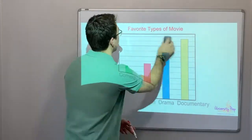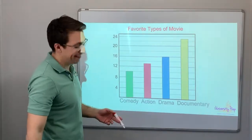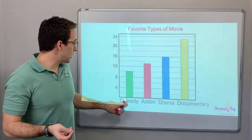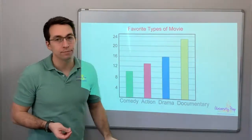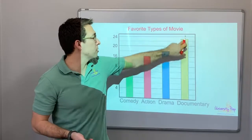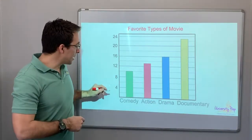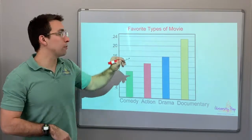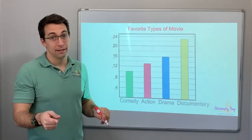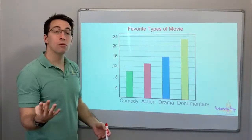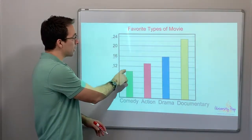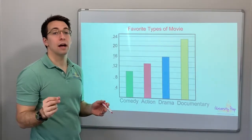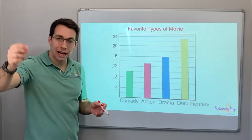Favorite types of movies: comedy, action, drama, documentaries. Documentaries are the most popular. Something tricky here: 4, 8, 12, 16, 20, 24 — it's not counting by two, it's counting by four, and it's got extra lighter lines in between. Be careful and make sure you're not just assuming what the number is — count it out.